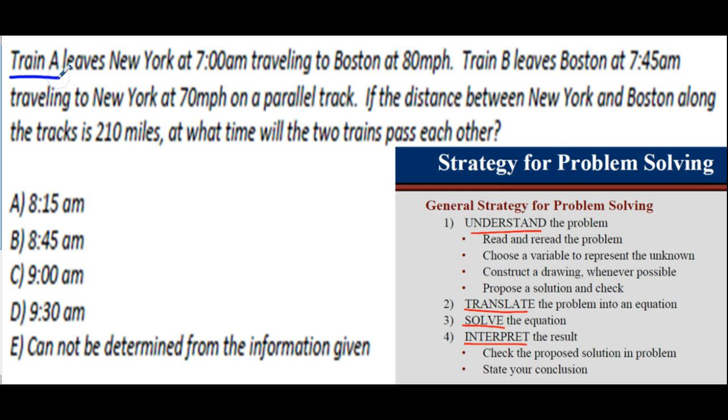We have train A and then we have train B, and they're heading toward each other on a parallel track. So this is not like the Adams family, the dad's not going to crash two trains together, thank goodness. There's two trains traveling toward each other on parallel tracks, and we want to know what time do the trains pass each other. We have a train leaving, our red train, train A leaving at 7 a.m. traveling at 80 miles an hour. The blue train leaves at 7:45 a.m.